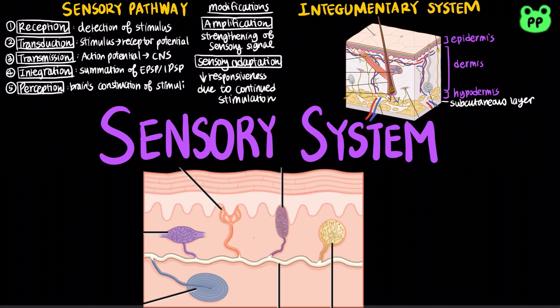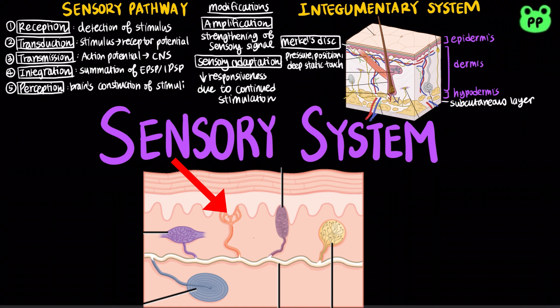There are five main types of cutaneous mechanoreceptors that respond to touch and pressure in our skin. Merkel's discs are found in the basal epidermis and hair follicles. They provide information on pressure, position, and deep static touch features, such as shapes and edges.